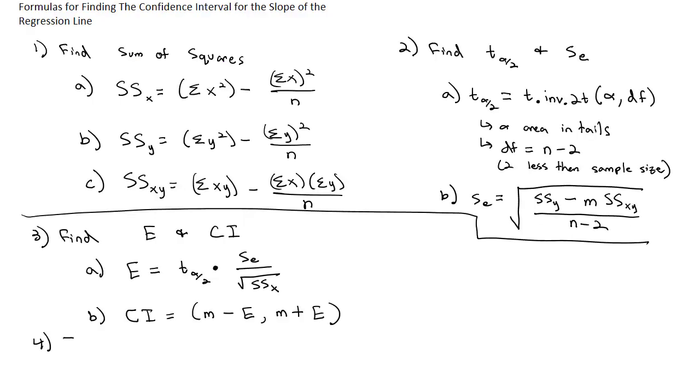Once we have our confidence interval, we always want to interpret it. Interpreting the confidence interval follows a very similar pattern, but this time for bivariate data, we say: we are blank percent confident, maybe at a 95% confidence interval or whatever.